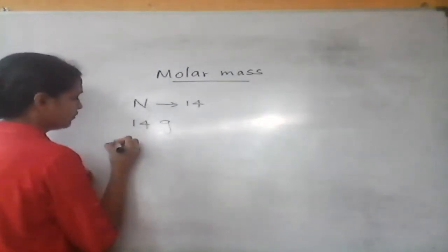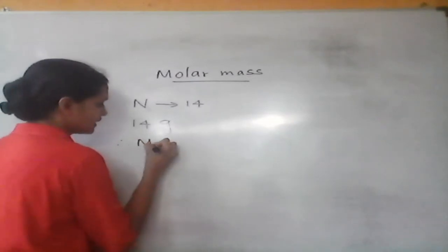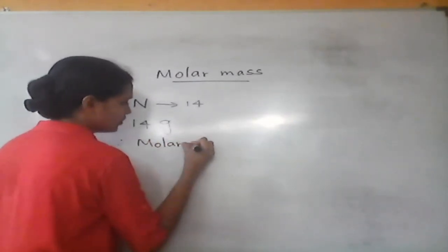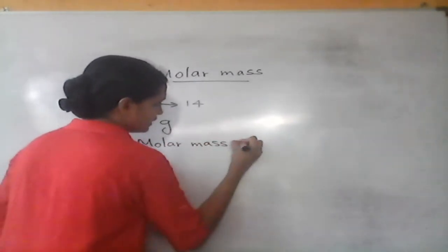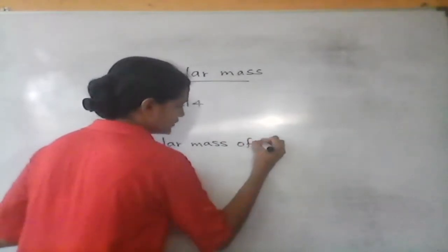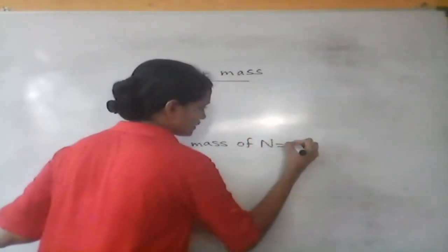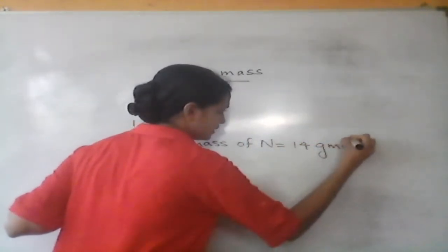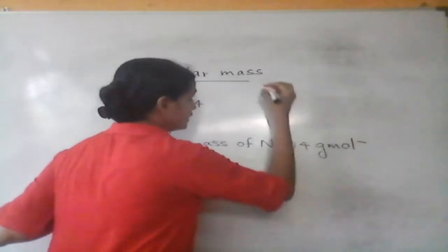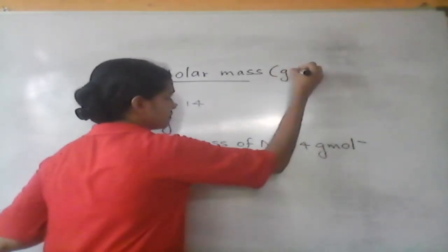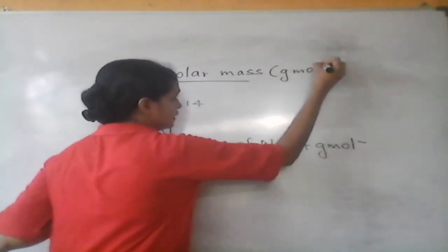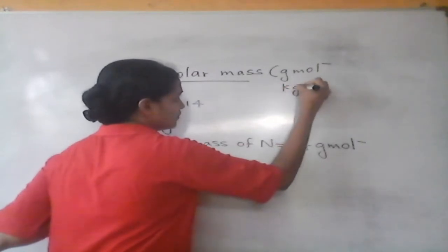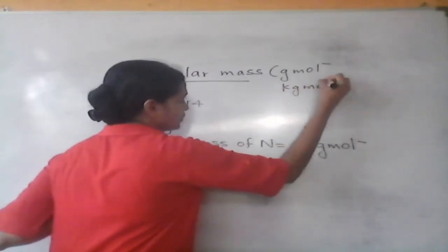Therefore we can write the molar mass of nitrogen as 14 grams per mole. The unit of molar mass is grams per mole or kilograms per mole.